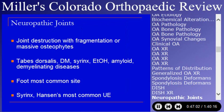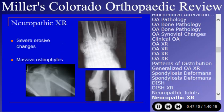Neuropathic joints get asked all the time. There's joint destruction with marked fragmentation of bone or massive osteophytes. Classically associated with tabes dorsalis — we don't see much of that now — but very commonly associated with diabetes, especially in the foot. In the upper extremity, think about syringomyelia or leprosy. Also associated with alcoholics. X-rays of the foot show marked deformity and osteophyte formation.